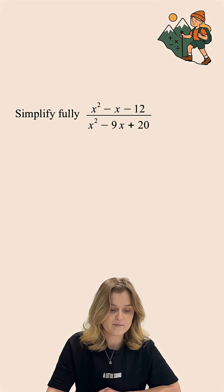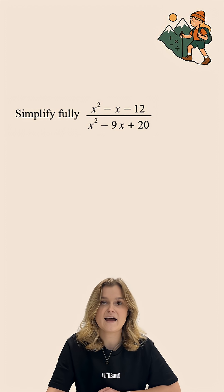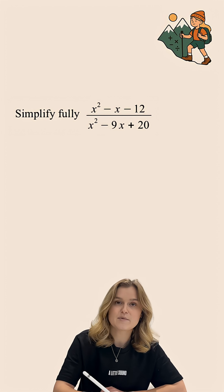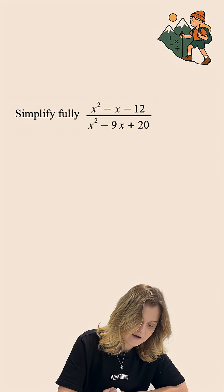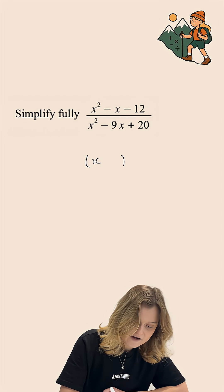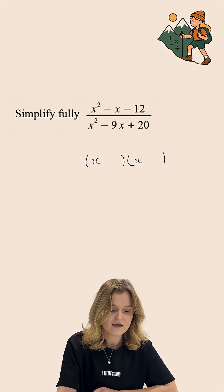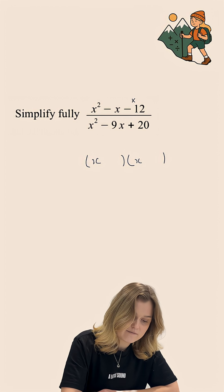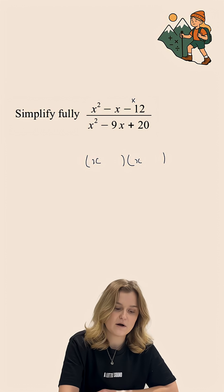We're going to start off here by factorising both the numerator and the denominator. Now, because the coefficient of the x squared term is 1 on the numerator, I know that my brackets are both going to start with x. I'm then looking for two numbers that when I multiply them, they make negative 12,